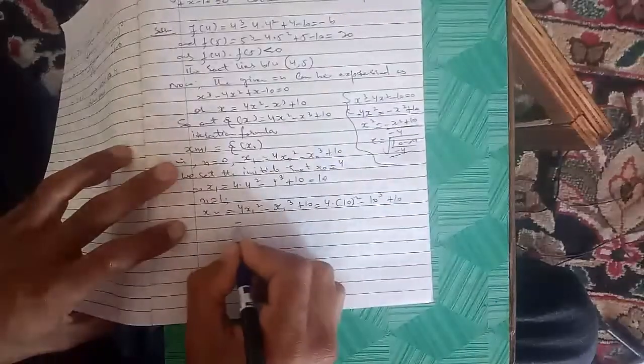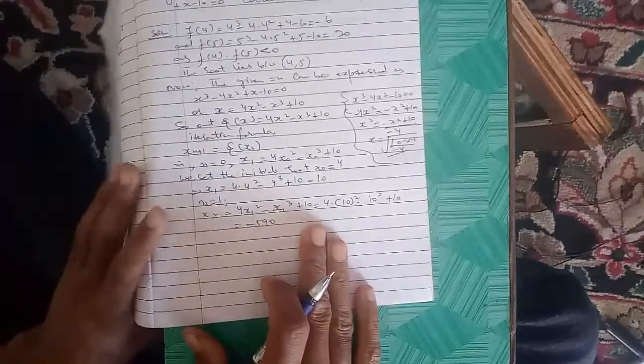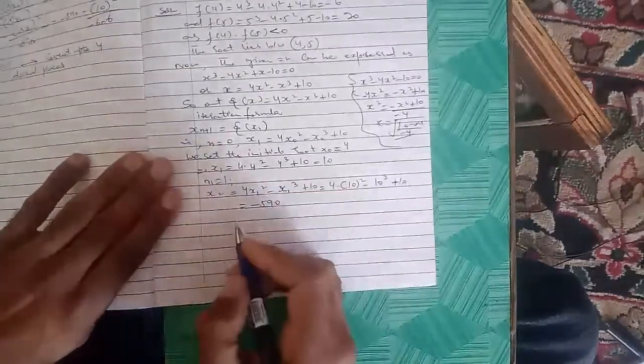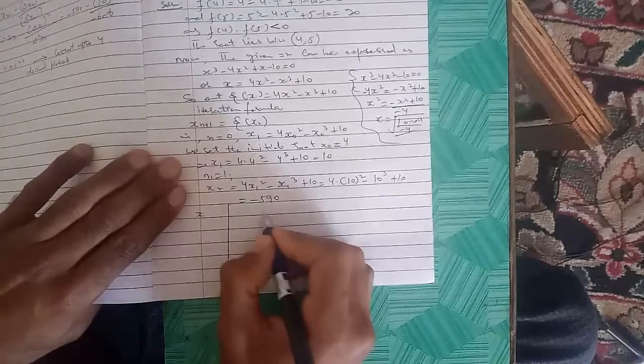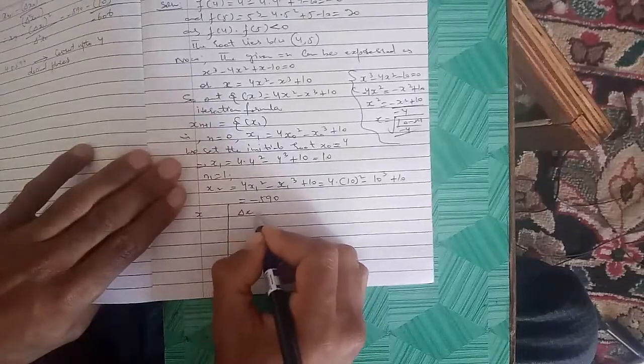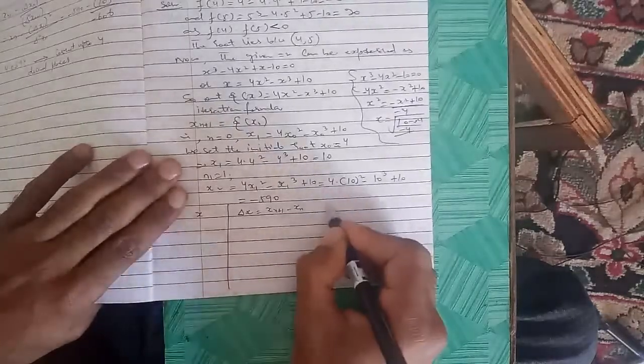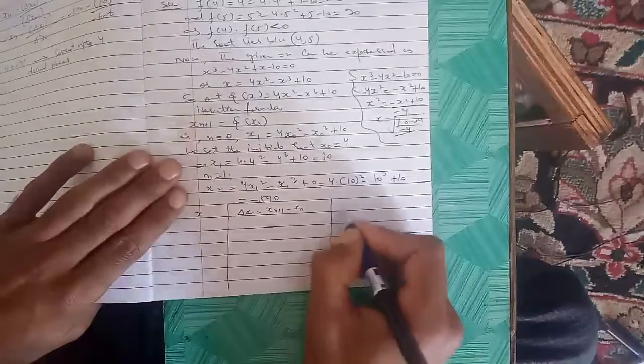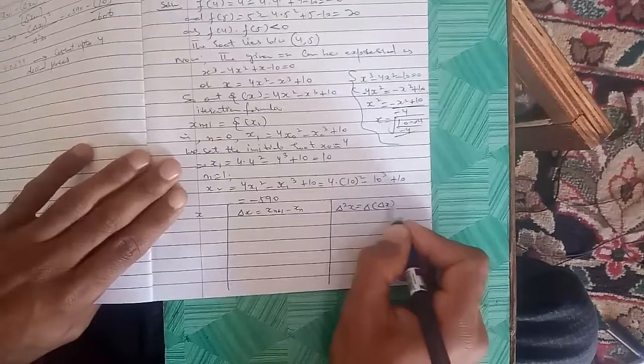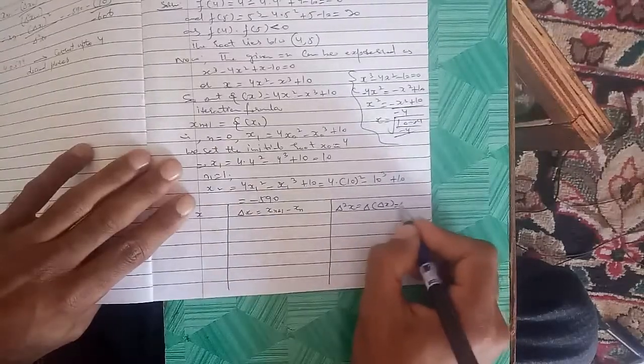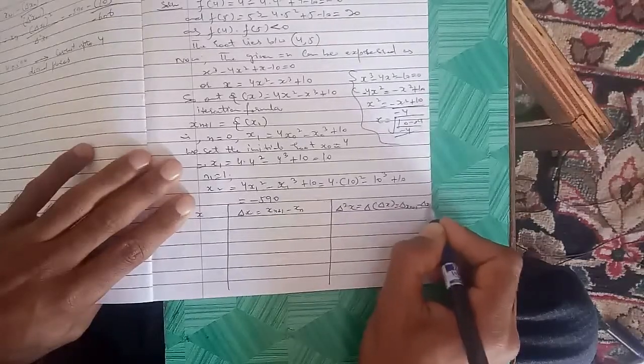Then we follow the table like this: x_n, then Δx equals x_{n+1} - x_n, then Δ²x equals Δx_{n+1} - Δx_n.